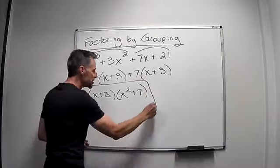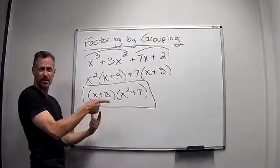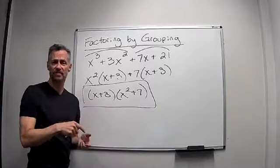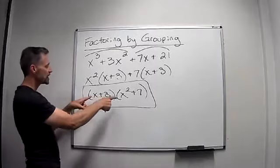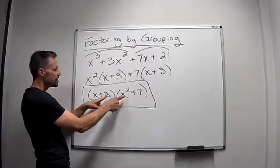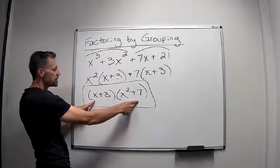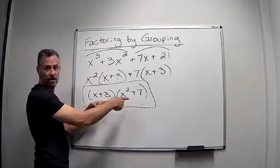And these can be in any order. If you have the x squared plus seven first and then the x plus three, remember multiplication is commutative, it's fine. But let's check: x cubed, 3x squared, plus 7x, plus 21. So that does work.